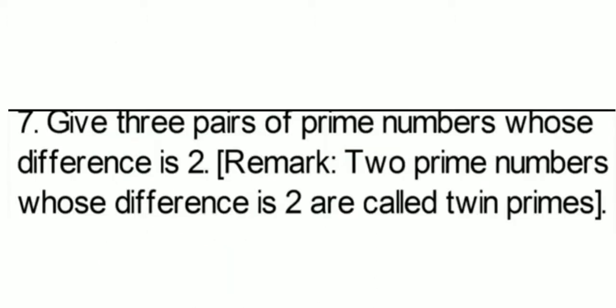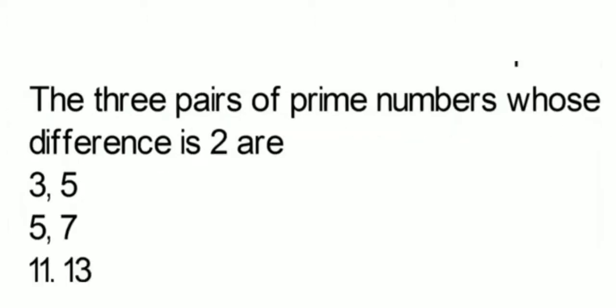Question number 7: give 3 pairs of prime numbers whose difference is 2. The remark states that 2 prime numbers whose difference is 2 are called twin prime numbers — the difference between the prime numbers should be 2 only. The 3 pairs are: 3 and 5, 5 and 7, and 11 and 13. You can find more such pairs, but here we need only 3.